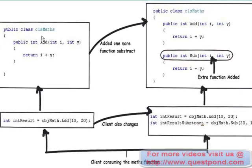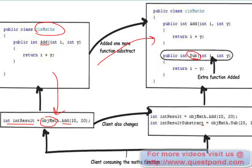Let's first try to understand the problem. Here is a simple CLSMaths class and this CLSMaths class has an add function. This CLSMaths class is consumed in a UI code — basically you have created an object called objmath of CLSMaths and you are calling the add function and getting the results. Over a period of time somebody adds a subtract function in the CLSMaths class. If you want to use this subtract function in your UI code, you have to call the dot sub method. Any changes in your business object CLSMaths will lead to changes in your UI code — there is heavy coupling between CLSMaths and your UI code.